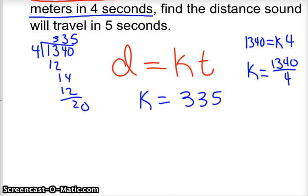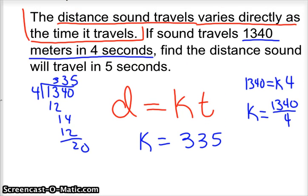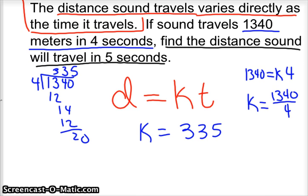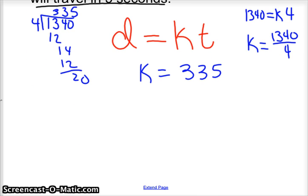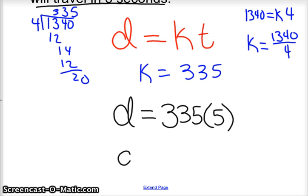Then what it wants us to find next is the distance sound travels in 5 seconds. Well, k is 335, so the distance would be d equals 335 times 5. And then you just multiply them.